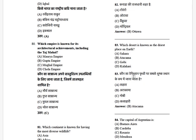Which empire is known for its architectural achievements including the Taj Mahal? The options are: Mauryan, Gupta, Mughal, and Chola. The answer is the Mughal Empire.